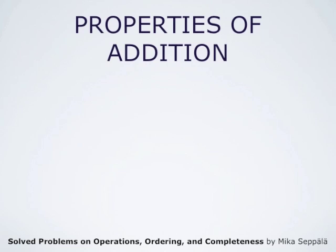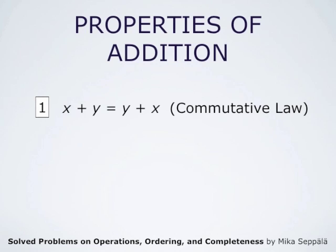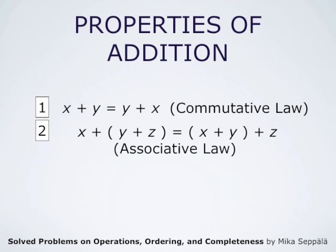First of all, properties of addition: x plus y is always y plus x. This is the commutative law. The second property is that x plus (y plus z) equals (x plus y) plus z. This is the associative law.